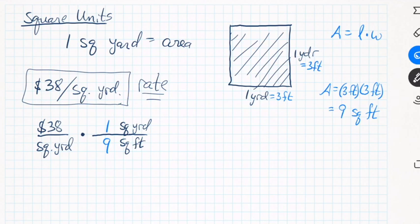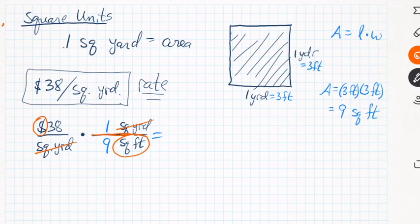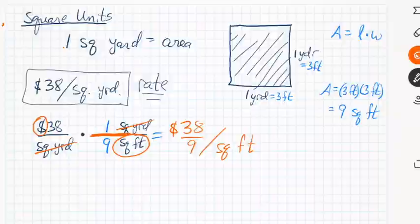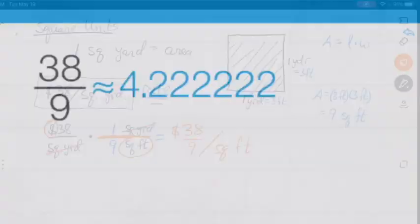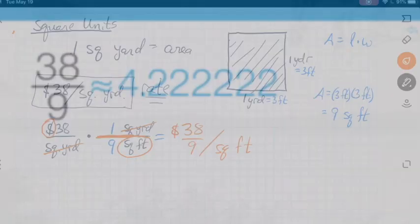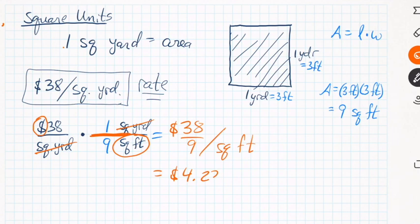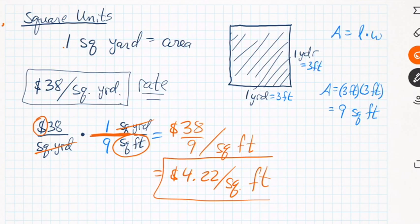Setting it up as a unit conversion: $38 per square yard, multiply by 9 square feet per 1 square yard — square yards cancel, leaving dollars per square foot. The 38 is in the numerator and 9 is in the denominator: 38 divided by 9 equals $4.22 per square foot. That's the correct conversion, not the $10 per square foot the stores were charging.